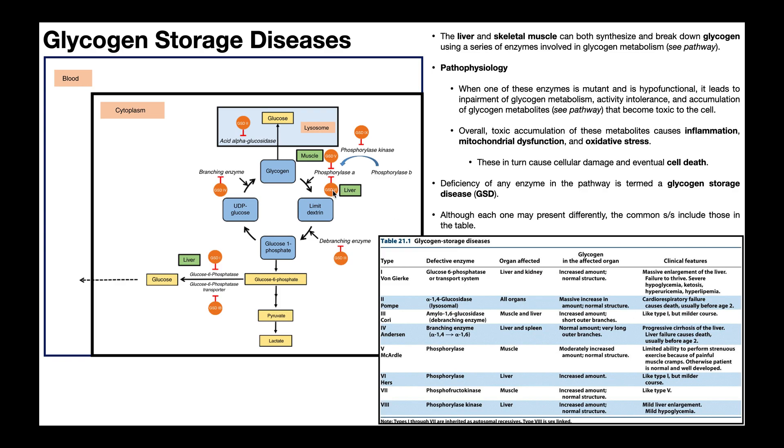Type 6 is the other deficiency of phosphorylase A specific to the liver. Obviously this is going to affect the liver. This is going to present similarly to von Gierke disease, type 1, but again it's going to follow a milder course, very similar to Cori's disease, type 3.